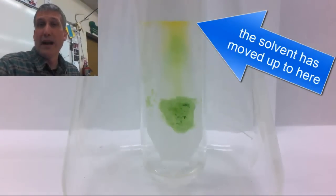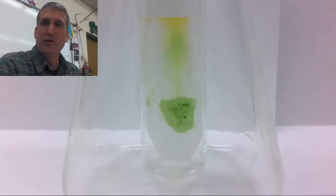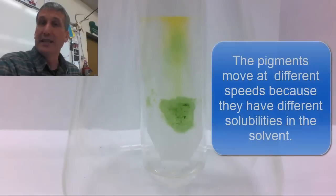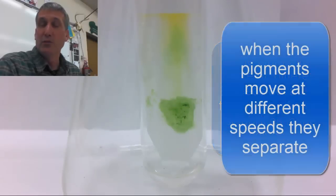Now you need to wait for the solvent to move up the chromatography paper. And as it moves up it will go past the pigment and pick up the pigments and move them up the paper. The reason the pigments separate is because they have different solubilities in the solvent so they move at different speeds. When the pigments move at different speeds they separate.